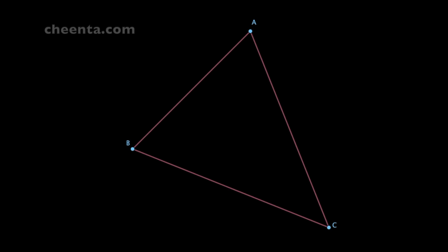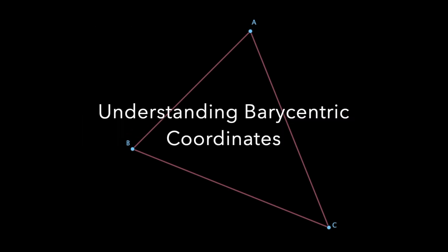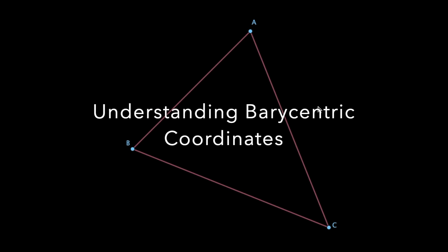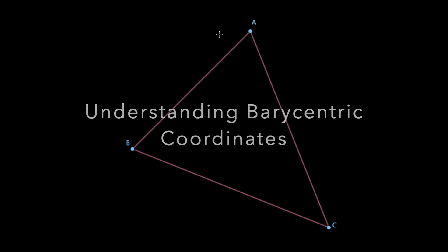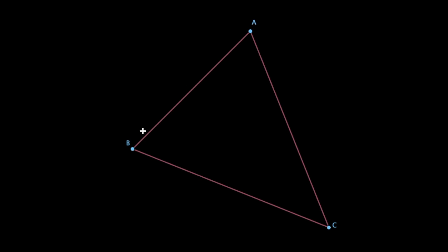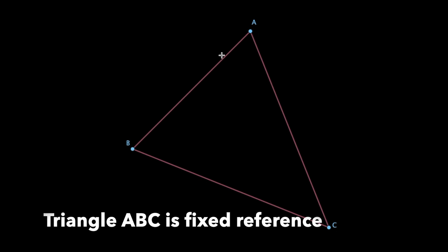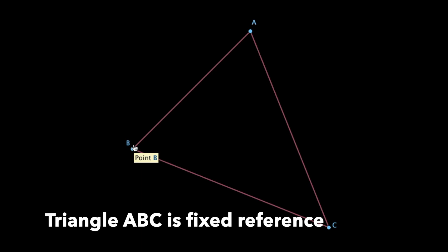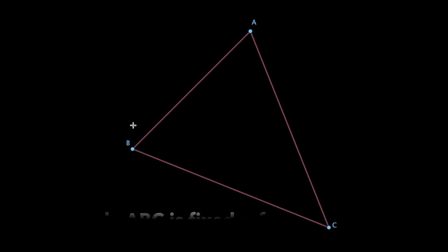Hello everyone. We want to really understand what barycentric coordinates are. In this particular context, triangle ABC is our reference triangle. Think of it as a coordinate plane — in a coordinate plane you have x-axis and y-axis as fixed axes, and with reference to that you have coordinates for points. A very similar thing happens here: you first fix a triangle ABC, and then you can talk about coordinates of points.